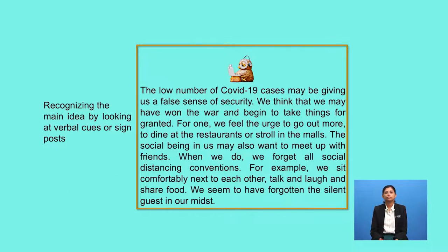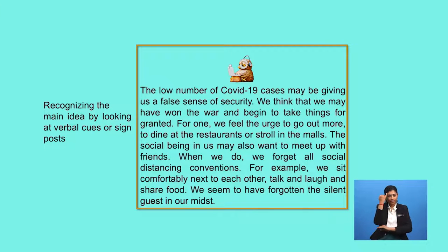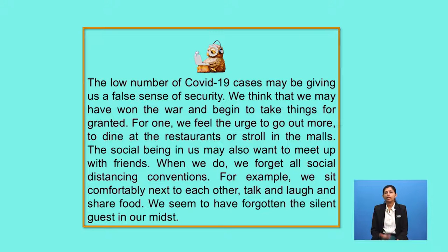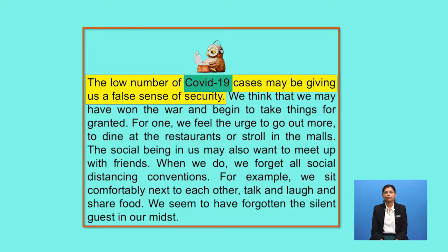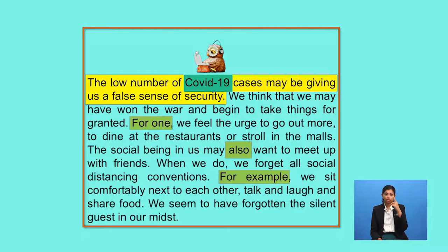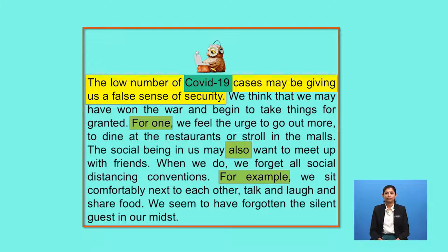Of course, in a listening test you're not lucky enough to have the transcript in front of you, but this is just to help us point out the signposts. To find out what the main idea is, you have to ask: what is the paragraph about? It's about COVID-19. What about COVID-19? Low numbers giving a false sense of security — that's your main idea. Now read on and spot the signposts, highlighted in green for you. Signposts like these usually signal an idea or example that supports the main idea.